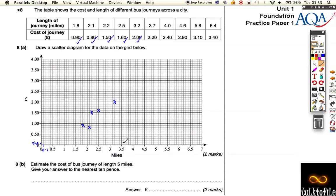So 3.7 goes all the way up to 2 pounds 20. 4 miles goes to 2 pounds 40. 4.6 miles, that's over here, goes all the way up to 2 pounds 90, so 3 pounds and back 10 pence.